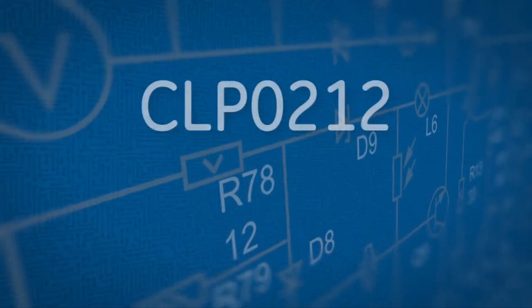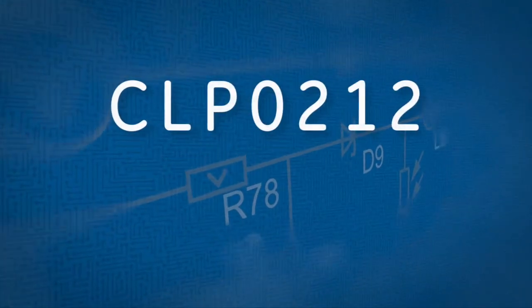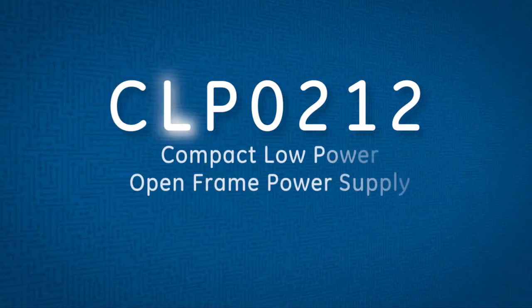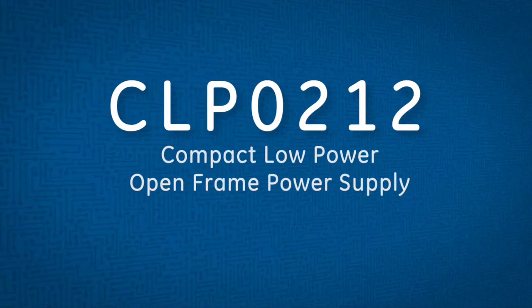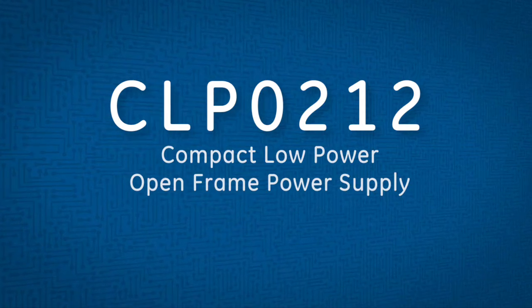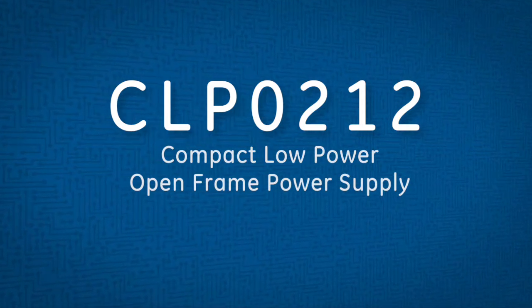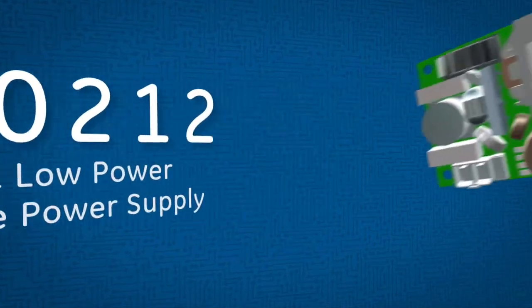The CLP-0212FP power supply is GE's first open frame compact low power product. It's also the first high power density solution in the 200 watt open frame space and it's ideally suited for power electric designers who are seeking space saving and power saving features.